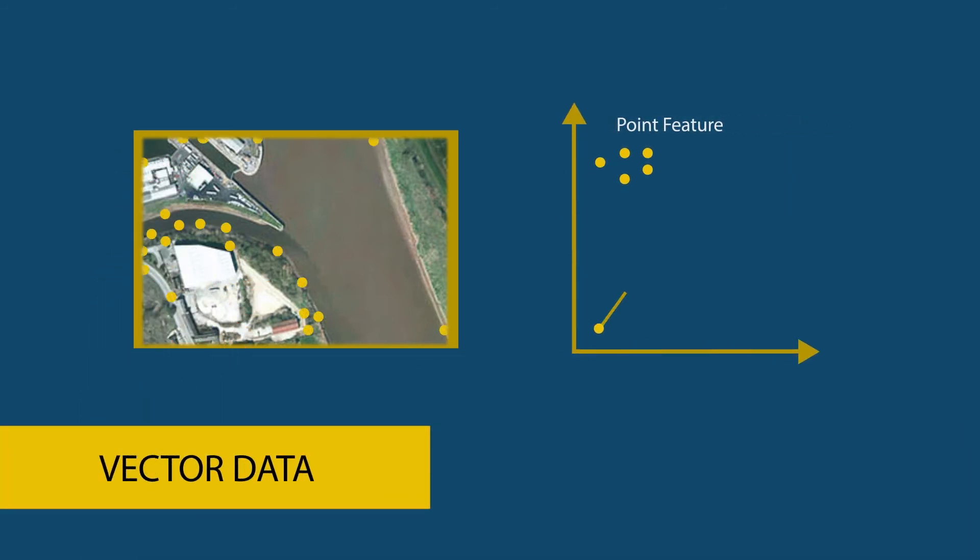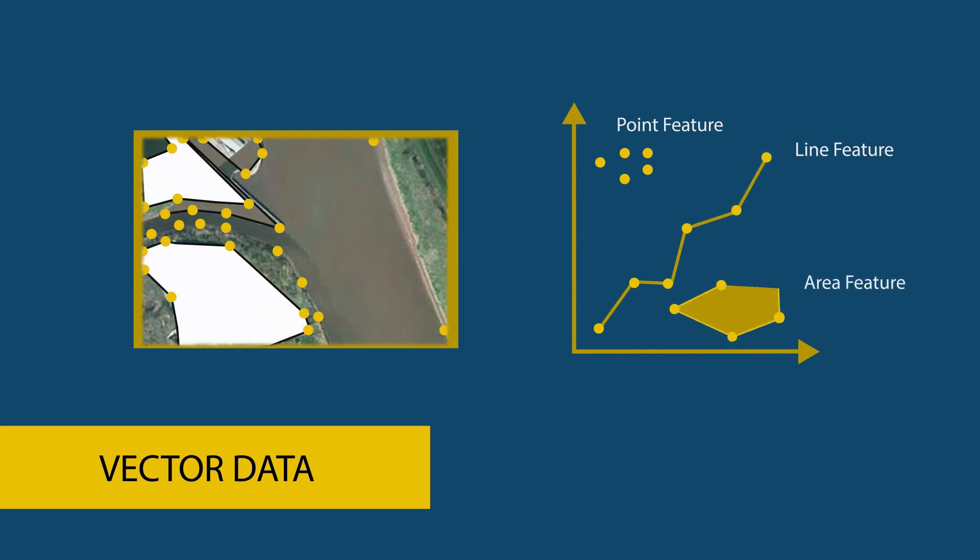The vector data model stores data in point, line, and polygon form. Shapefile is a very popular format to store vector data.